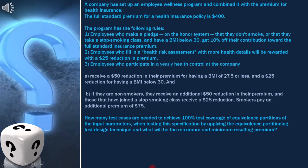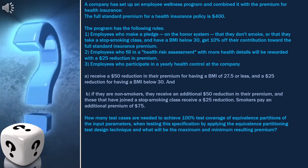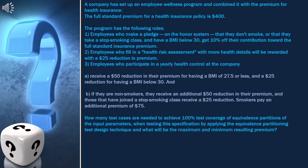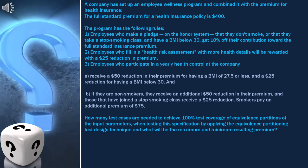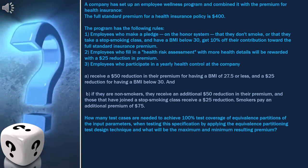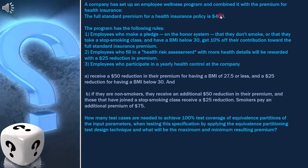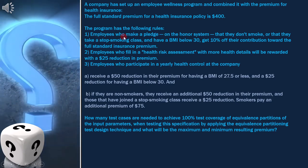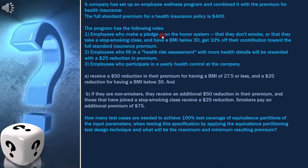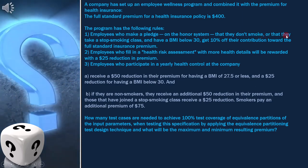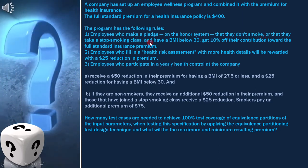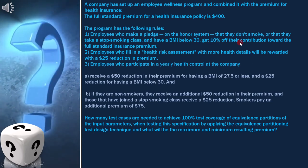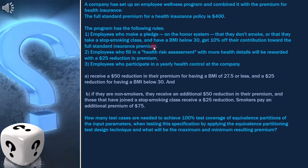Here the question is: a company has set up an employee wellness program and combined it with the premium for health insurance. The full standard premium for a health insurance policy is $400. The program has the following rules. Number one: employees who make a pledge on the honor system that they don't smoke, or that they take a stop-smoking class and have a BMI below 30, get 10% off their contribution toward the full standard insurance premium.